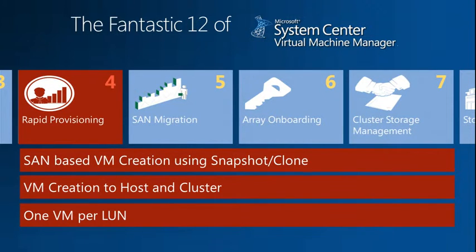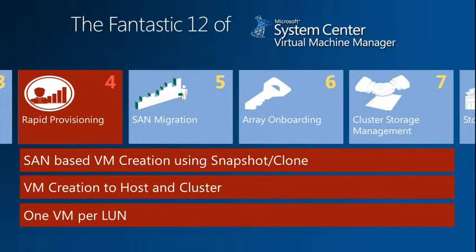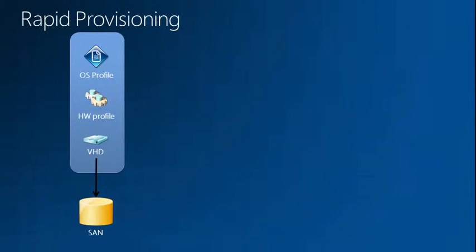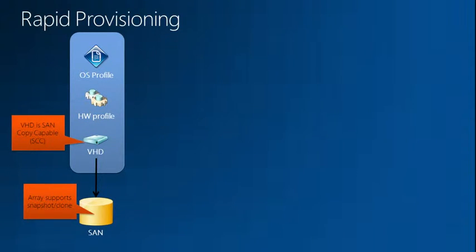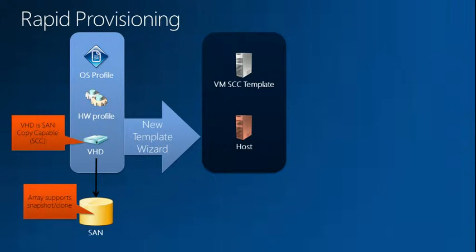We can do VM creation to hosts and clusters. We actually have customers doing ephemeral VMs using SAN-based provisioning where they don't use a cluster. For those who have automated at scale with clustering, VDS gets sensitive when you expose 100, 200, or 300 LUNs to a particular host — it just can't handle that many LUNs. So they break the cluster into smaller segments. There's a team inside Microsoft called Agile Labs that has hundreds of hosts with three EMC arrays and provisions thousands of VMs a week using this capability. What I didn't show you is the construction of the template: we combine an OS profile, hardware profile, and the VHD discovery, run that through the VM template, and you have a SAN copy capable template.